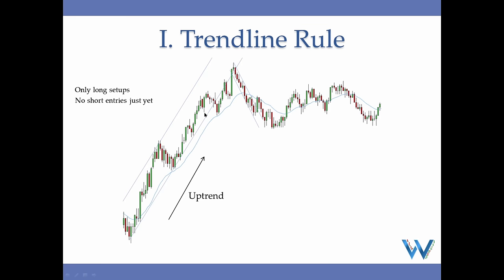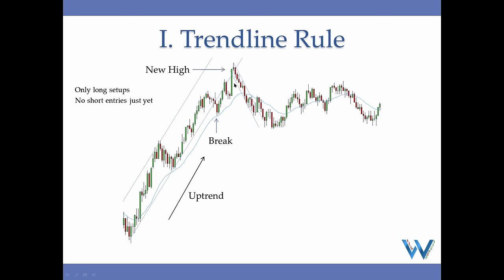Bullish uptrend working higher — there is a break of the channel, and the trend line rule says that after the break a new extreme is most likely going to be formed. Price created a new high that is higher than the high inside the channel, so the trend line rule was fulfilled.